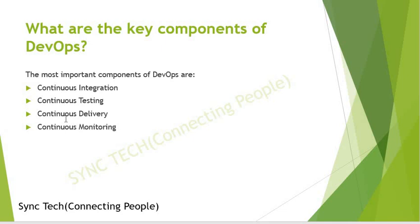The next question: what are the key components of DevOps? Basically the key components of DevOps as per my knowledge are continuous integration, continuous testing, continuous delivery, and monitoring. These four key components — CI, CT, CD, and continuous monitoring — are what the question is focused on.